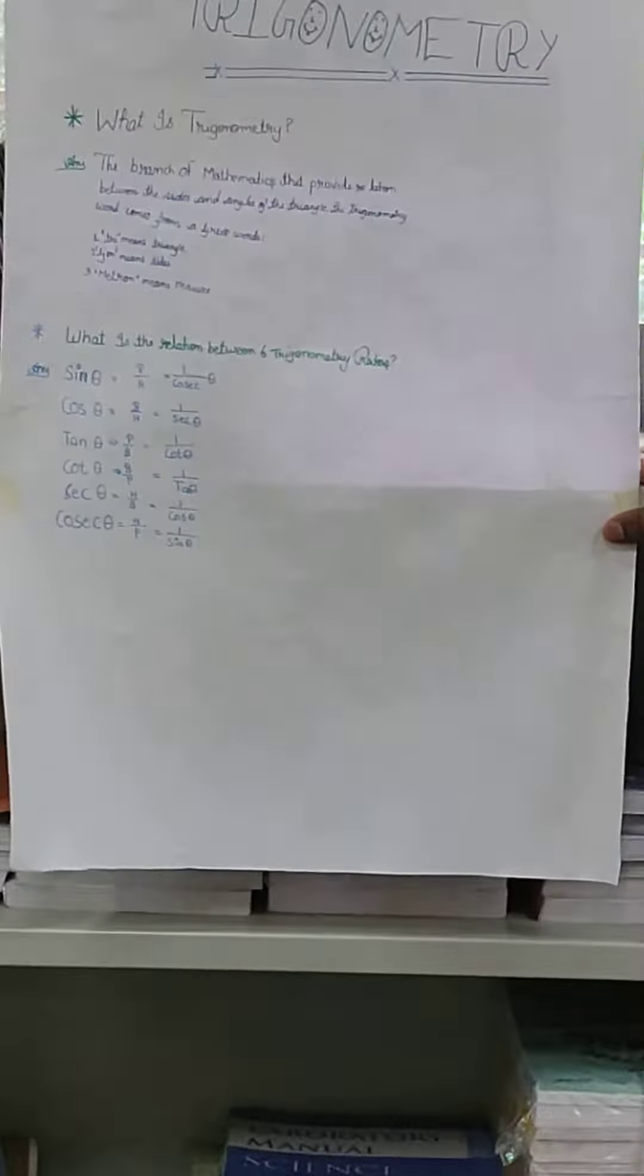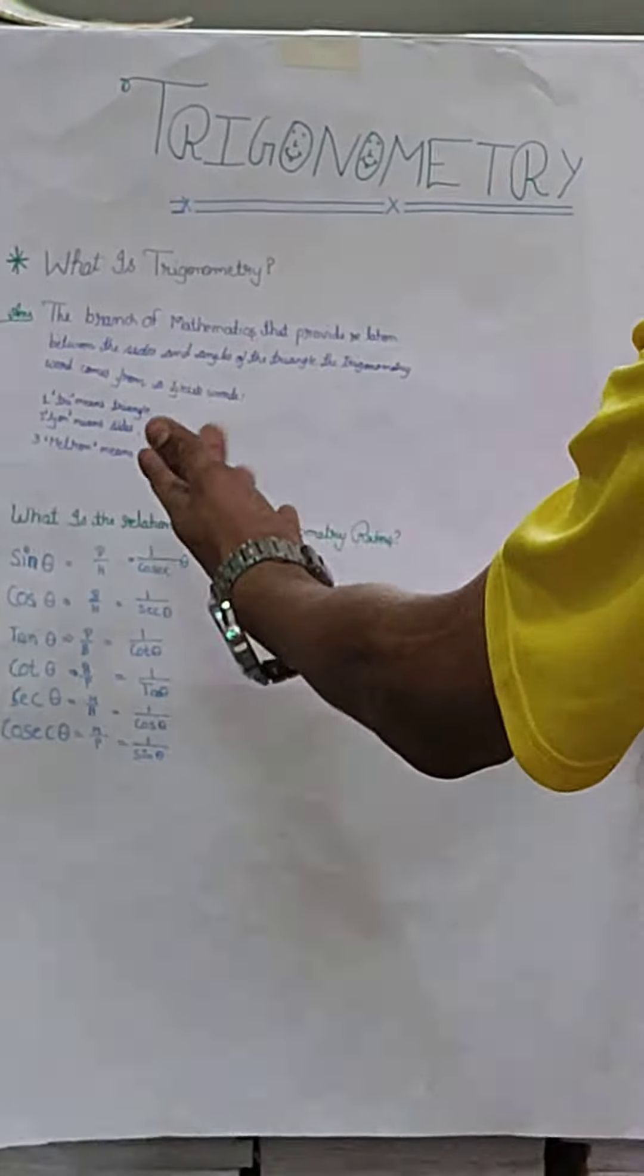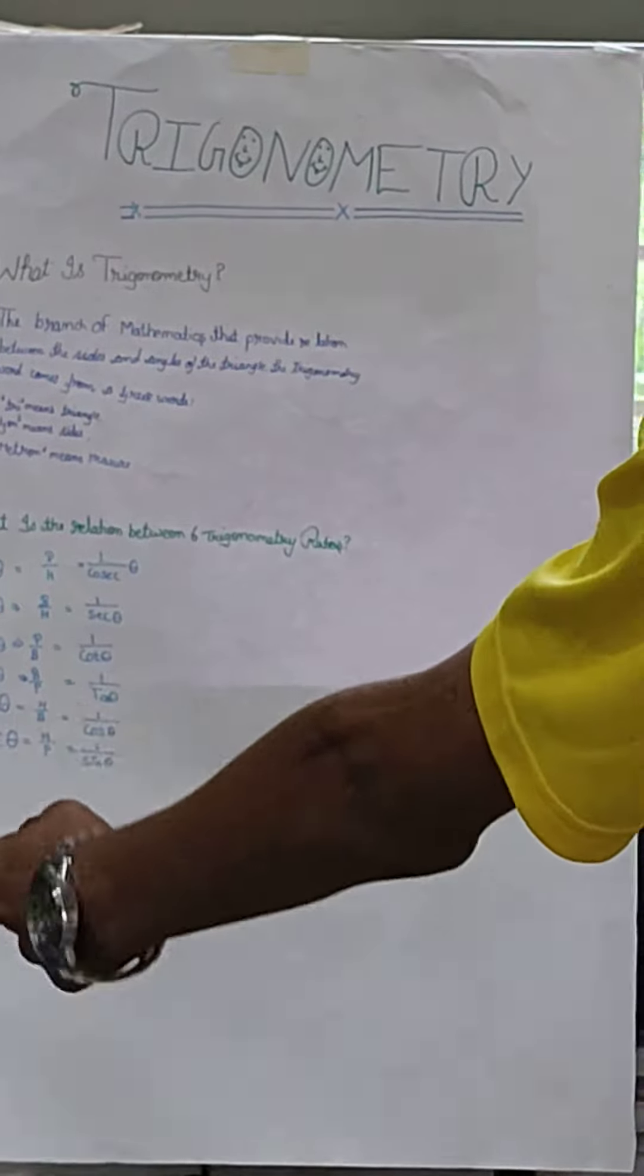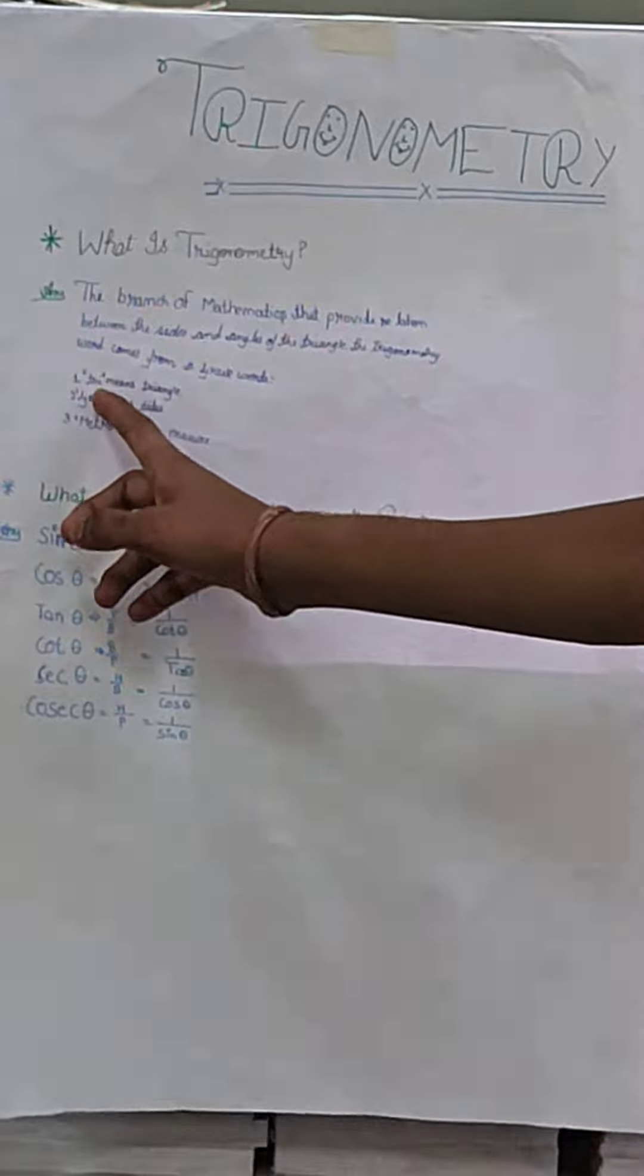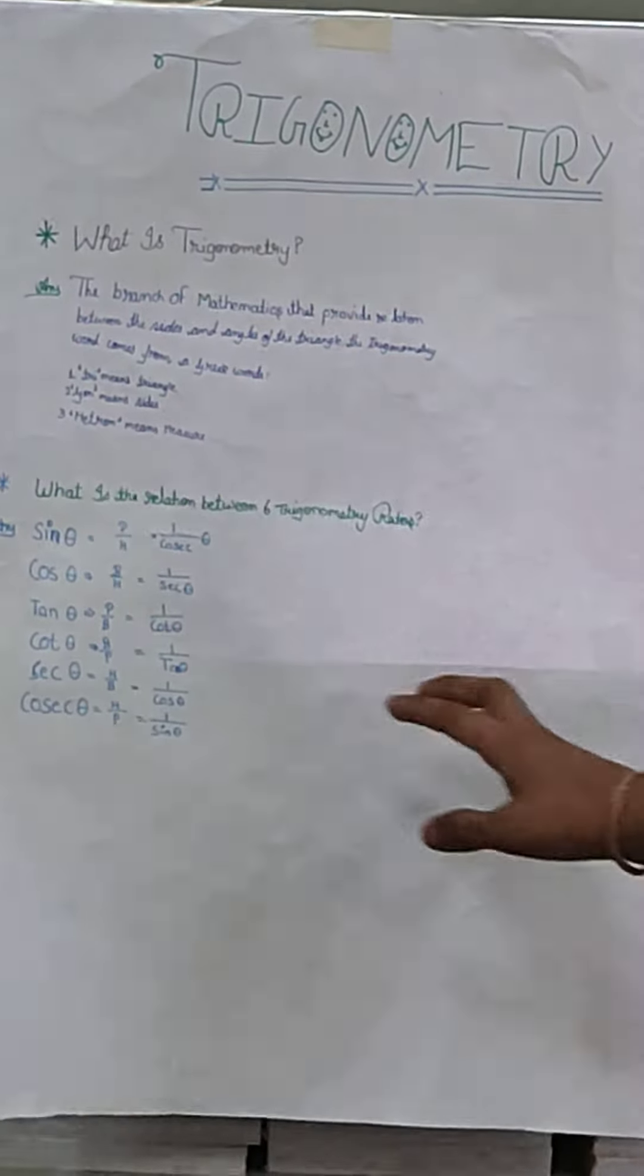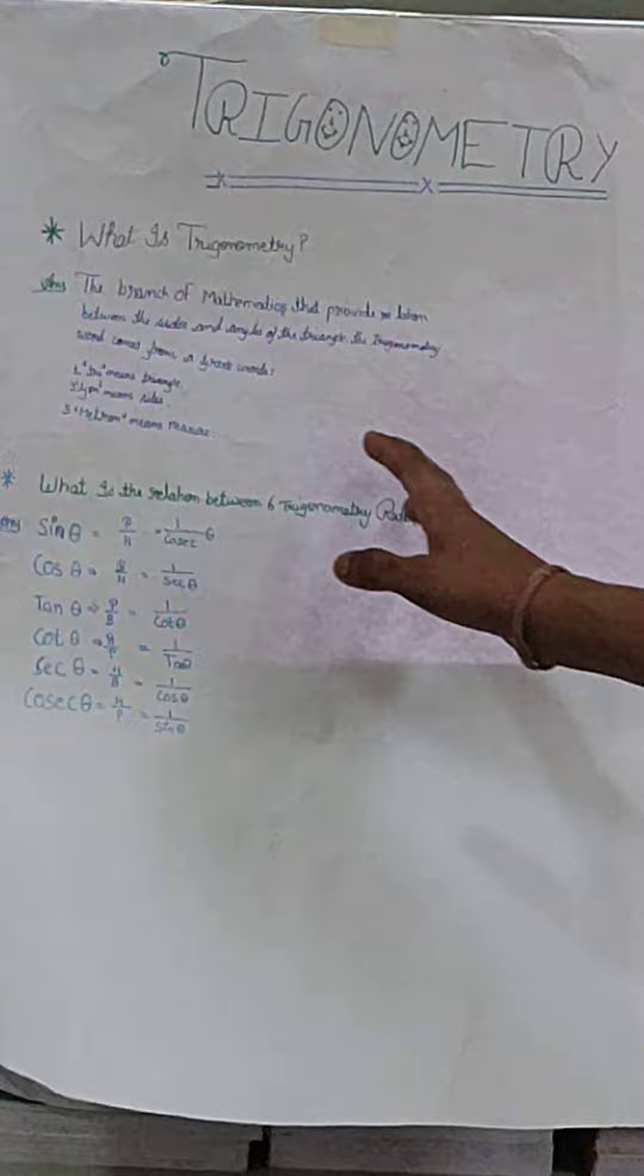The branch of mathematics that provides relations between the sides and angles of the triangle. The trigonometry word comes from Greek words: trigon means triangle, gonia means angle, and metron means measure.